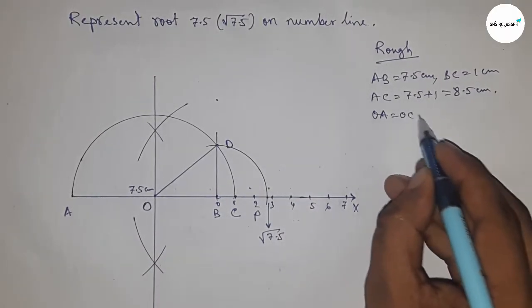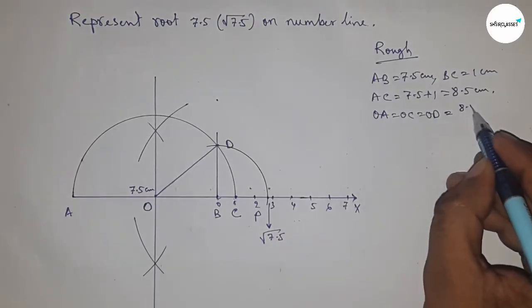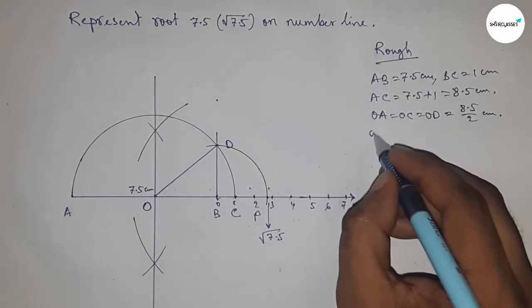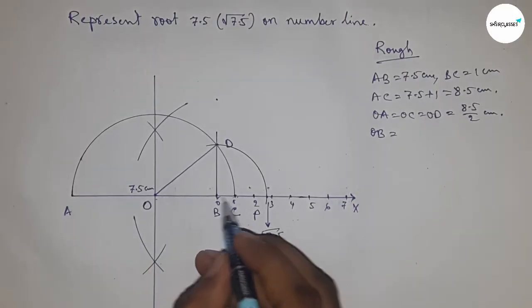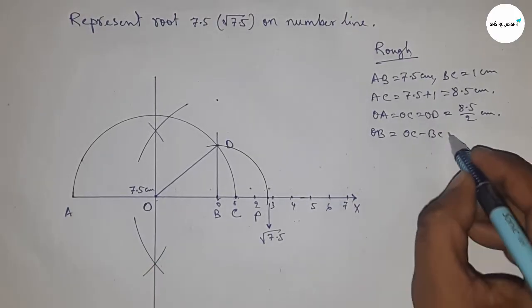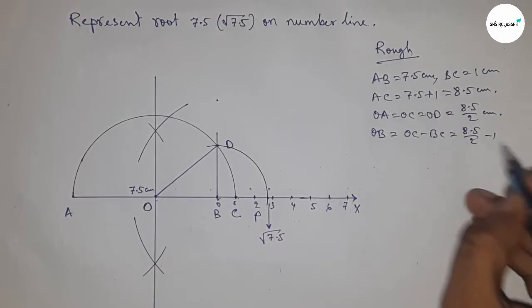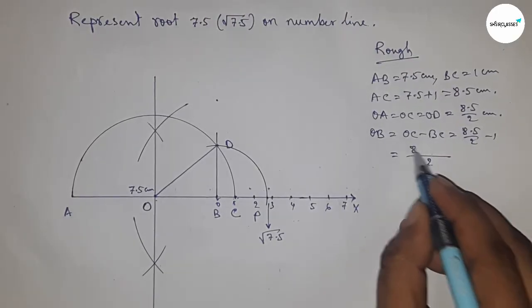Now distance OB equals OC minus BC. So putting the value of OC and BC and after calculating, this is 6.5 by 2 centimeters.